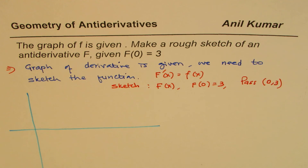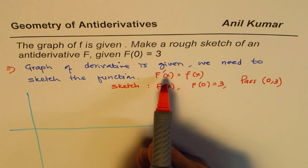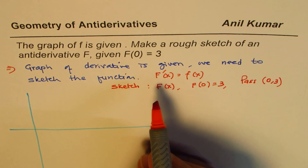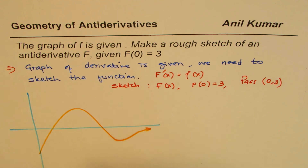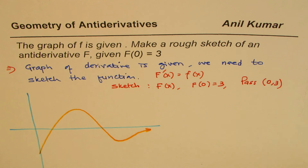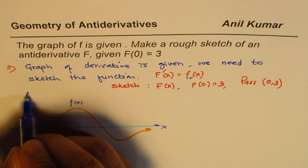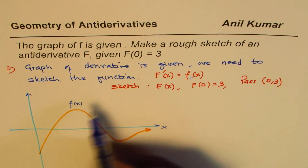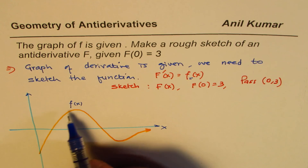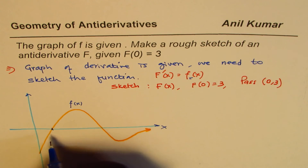What I will do here is give you the graph of the derivative, and from there you need to sketch the graph of the function. Let's say the graph of the derivative looks something like this. This is the graph of the function f(x), with this being the x-axis. Since this is the function we want the anti-derivative of, we treat it as a derivative and want the function.